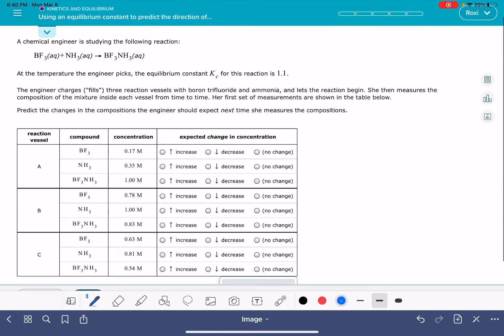To solve this problem, we're going to be calculating the value of Q for every single one of these different data sets. Q is calculated the same way that we would calculate K, meaning that we're going to write an equilibrium expression. The equilibrium expression is going to have the products over the reactants, every one of them raised to their stoichiometric coefficients.